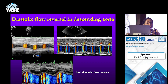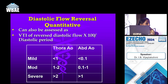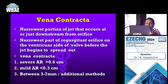On M-mode, the EF slope is reduced in mitral stenosis. However, in the presence of AR, fluttering of the anterior mitral leaflet (AML) is seen, indicating that the AR jet is striking the AML. This fluttering indicates significant AR. Pressure half time is also important for assessing aortic regurgitation, in addition to the deceleration slope.